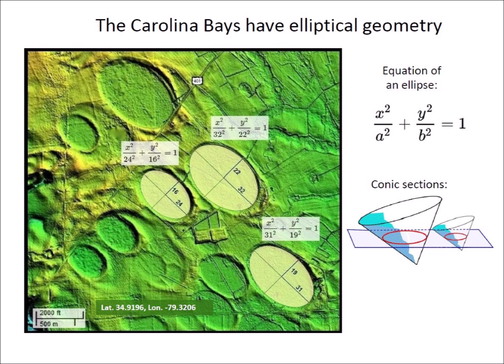The secondary impacts of glacier ice ejected by the extraterrestrial impact liquefied the ground and produced inclined conical cavities. The prototypical elliptical geometry of the Carolina Bays corresponds to cones inclined at 35 degrees, and it is the most convincing evidence that the bays were created by impacts and not by wind and water mechanisms.